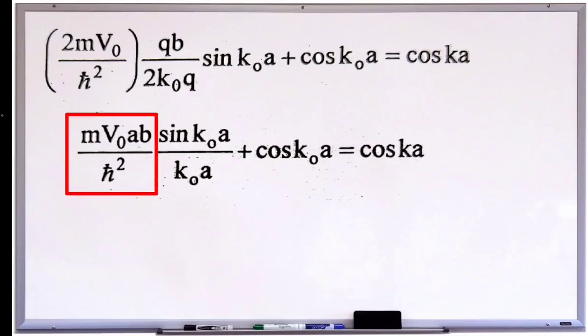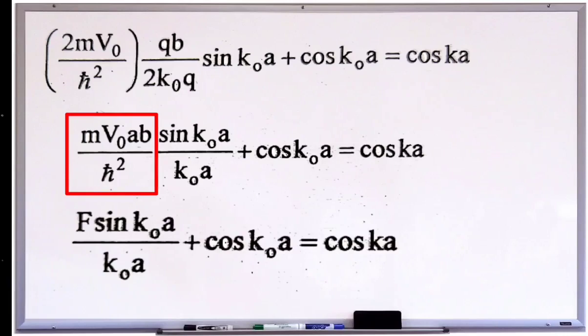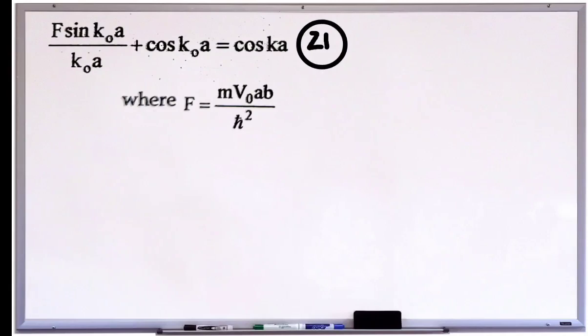Then this term, we can put this term as capital F. So the equation will become F sin k₀a divided by k₀a plus cos k₀a which will be equal to cos ka. This can be taken as equation number 21. Here F is equal to mV₀ab divided by ℏ².